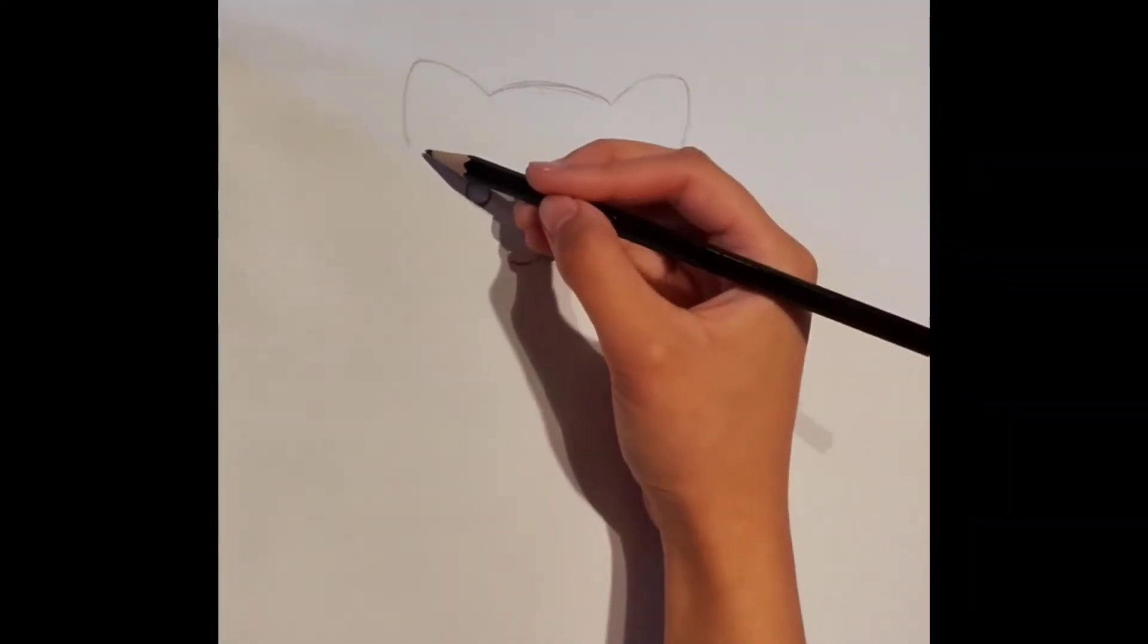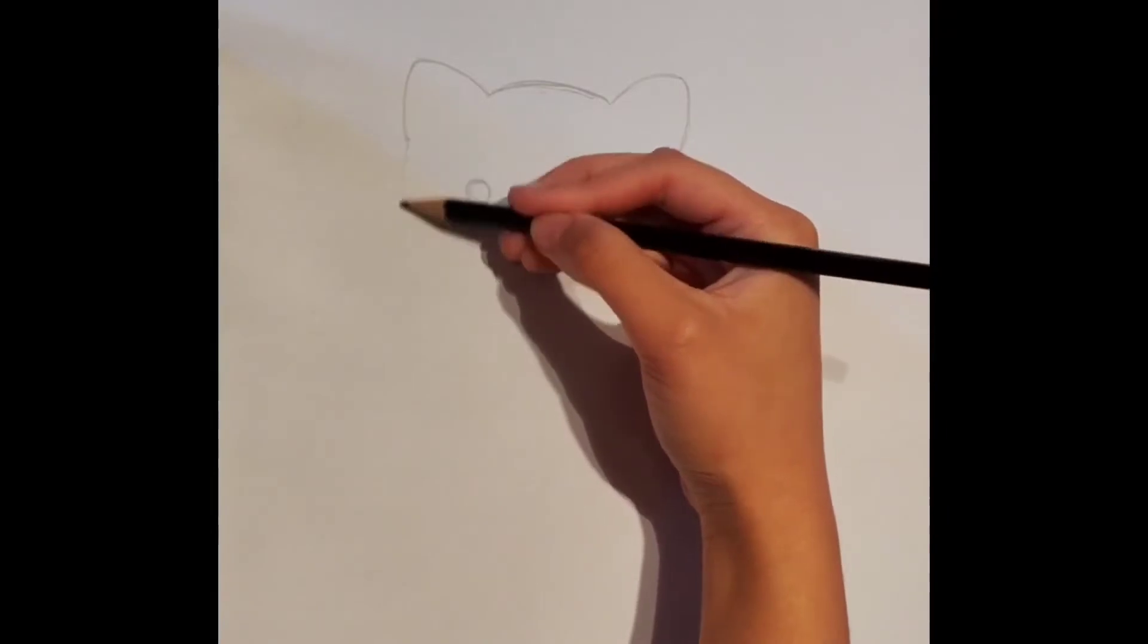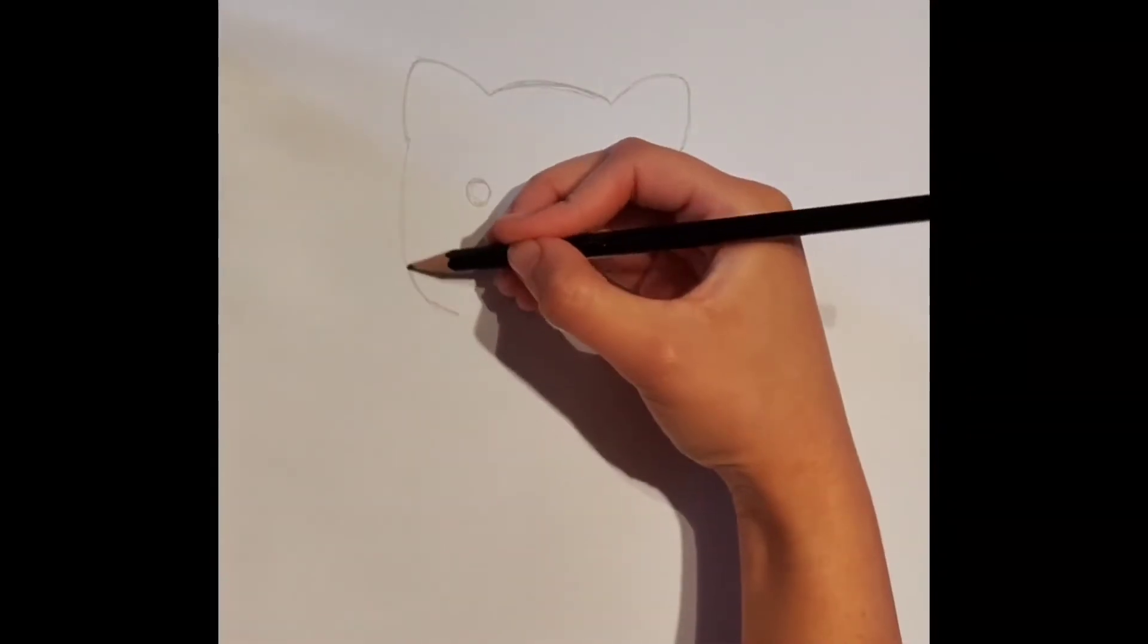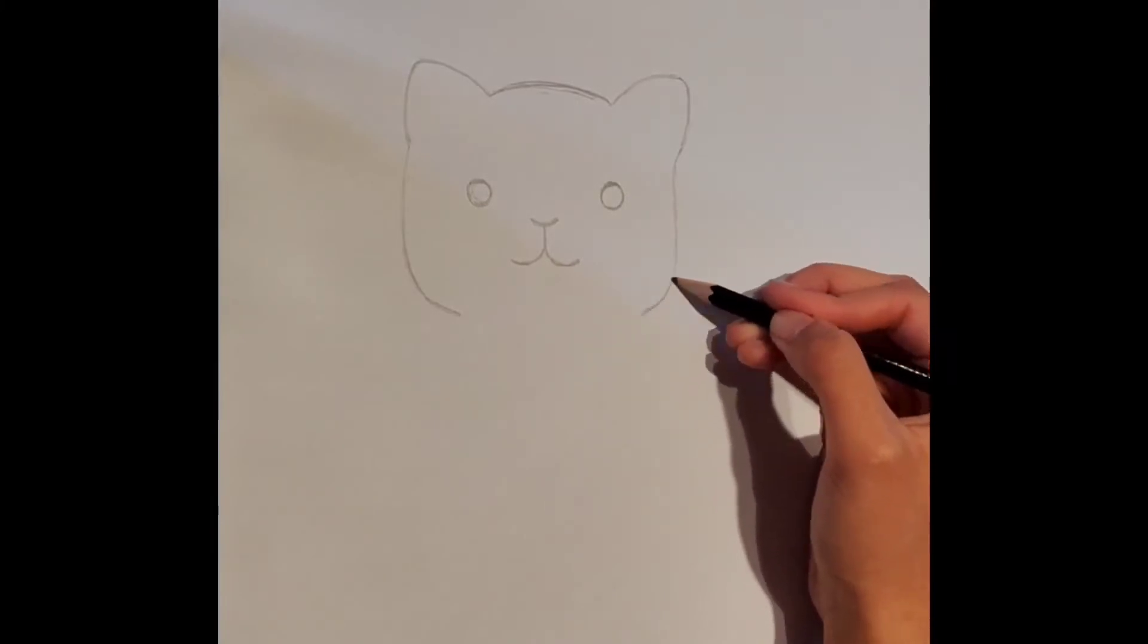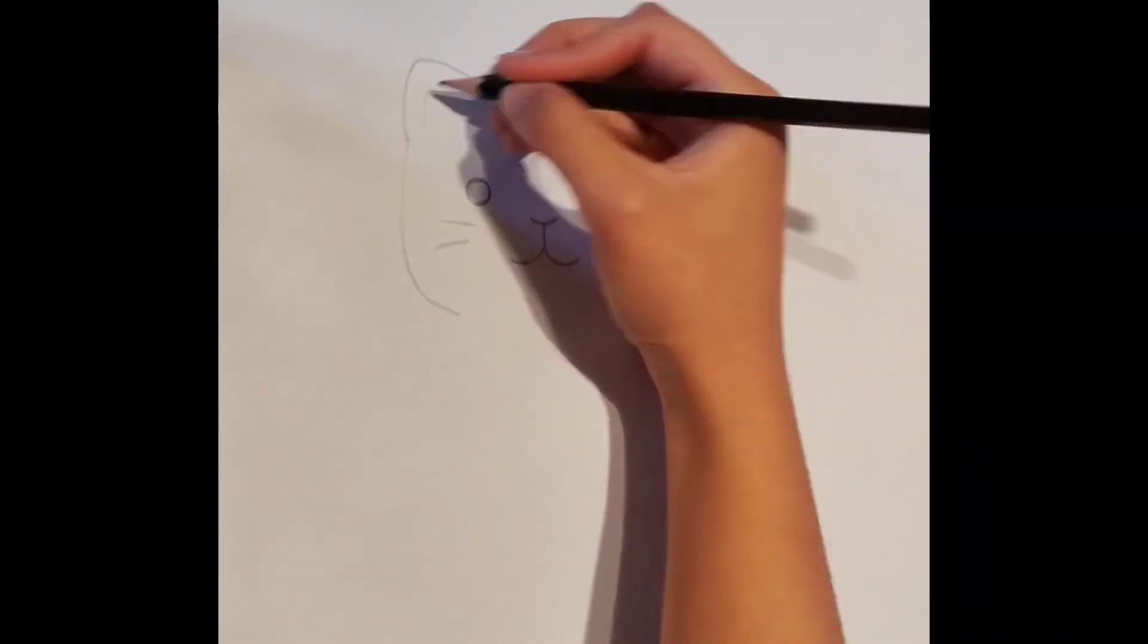Now, from the tip of the end of this ear, we are going to draw another curve that goes all the way around before it begins to the mouth. Then, we do the same on the other side. Don't forget the little details such as the whiskers and the details on the ear.